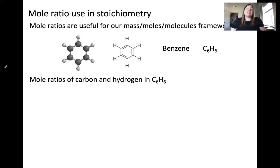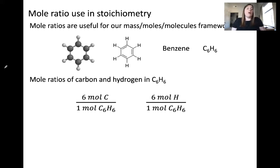Let's put this to practice and apply it to a stoichiometry problem. Here are several representations of the molecule benzene, which has the formula C6H6. We can determine that in every one molecule of benzene there are six carbon atoms. Therefore, in every mole of benzene, there are six moles of carbon atoms. Likewise, in every one mole of C6H6, there are six moles of hydrogen.